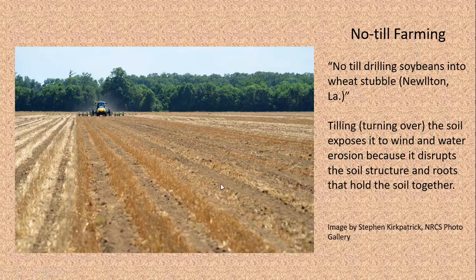Soybeans are excellent for increasing the amount of nitrogen present in the soil. Often farmers who grow wheat or corn will alternate with soybeans so that they can add nitrogen back into the soil in between the corn and wheat crops.